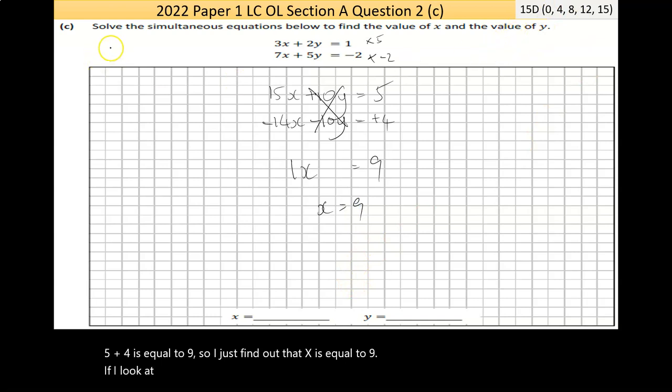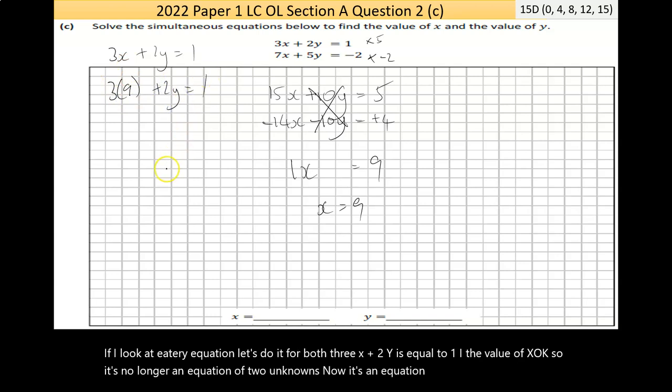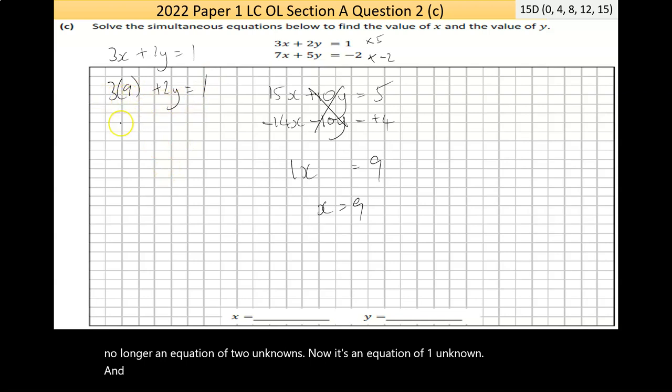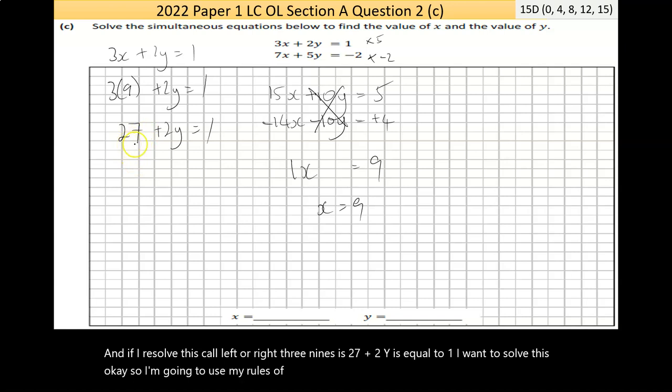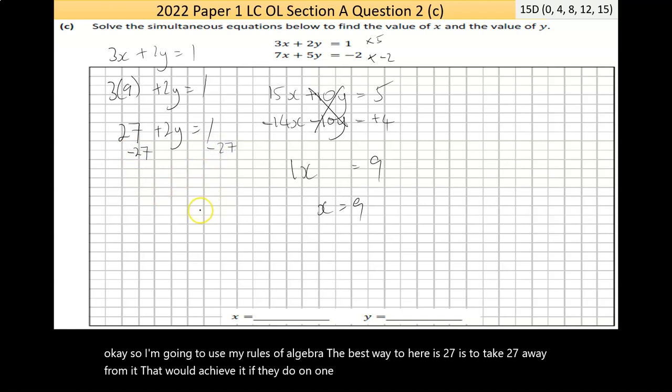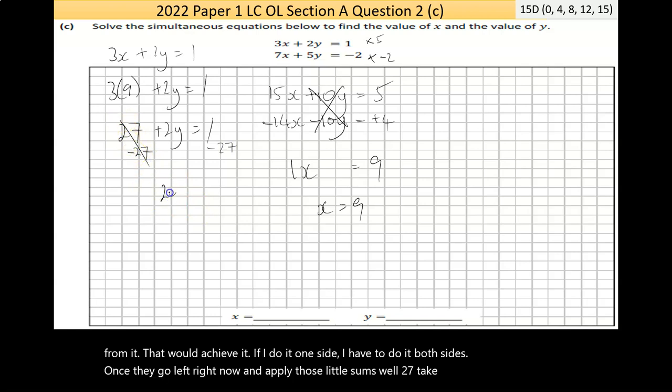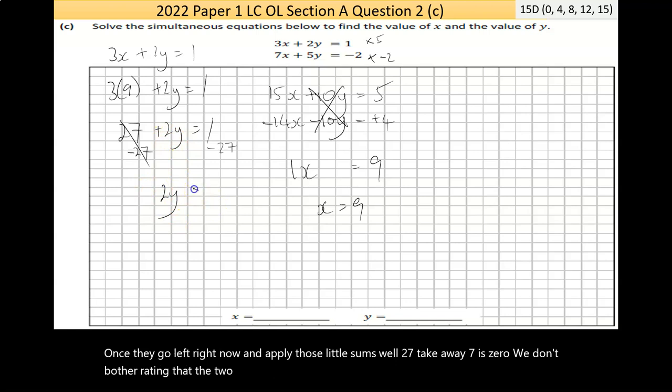Now, if I look at either equation, let's do it for both. 3x plus 2y is equal to 1. I now know the value of x, so it's no longer an equation of two unknowns. Now, it's an equation of one unknown. And if I resolve this, go left to right, 3 times 9 is 27 plus 2y is equal to 1. I want to solve this, so I'm going to use my rules of algebra. The best way to carry this 27 is to take 27 away from it. That would achieve it. If I do it one side, I have to do it both sides.